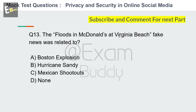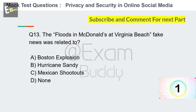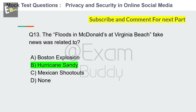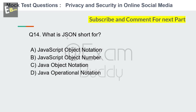Question 13: The floods in McDonald's at Virginia Beach fake news was related to which event? Options include Hurricane Sandy. The answer is B: Hurricane Sandy.